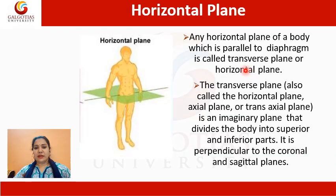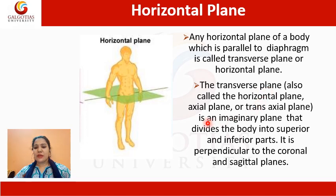The horizontal plane is a plane of the body which is parallel to the diaphragm, also called the transverse plane or the horizontal plane. The transverse plane is an imaginary plane that divides the body into superior and inferior parts. It sits perpendicular to the coronal and sagittal planes.